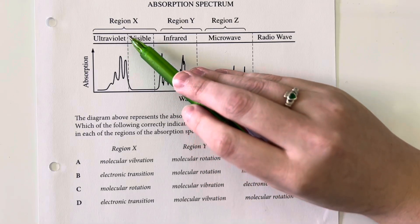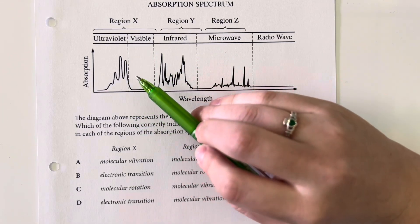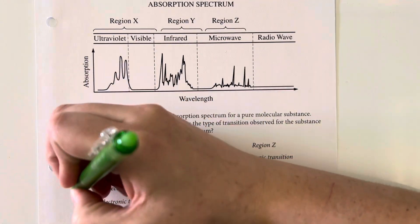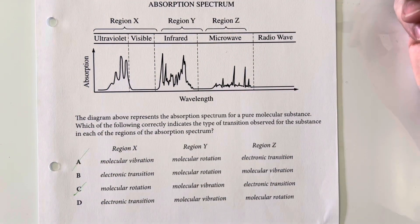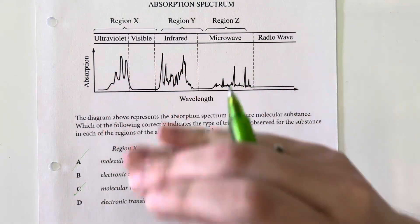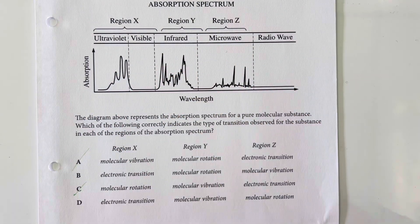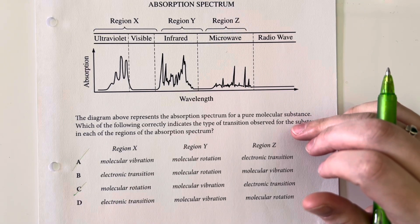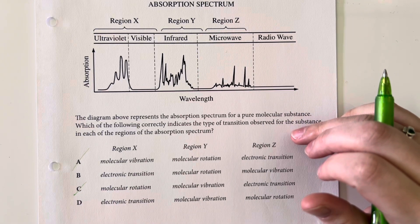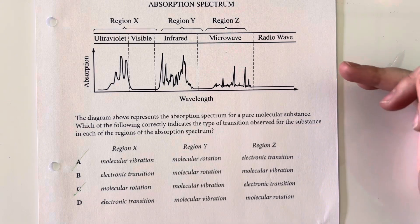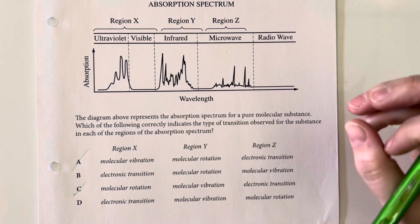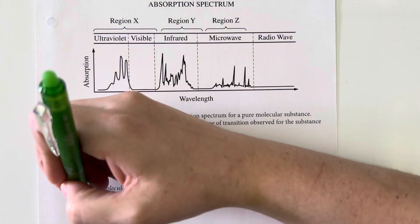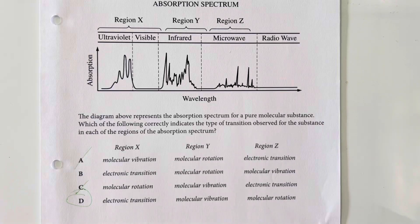So, for ultraviolet, we are dealing with electronic transition. And so, we will eliminate any options that don't have electronic transition as what is happening there. Region Y, we're dealing with infrared, and we are dealing with molecular vibration for the infrared spectrum, and molecular rotation for the microwave spectrum. So, that is going to be option choice D.